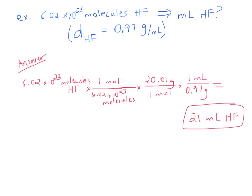Here is the answer. Start with 6.02 times 10 to the 23rd molecules of HF. You don't want molecules, so following the roadmap, go from molecules to moles. The conversion between molecules and moles is Avogadro's number: 6.02 times 10 to the 23rd. Molecules cancel out and now you're in moles. Now go from moles to grams using the molar mass. The molar mass of HF: H is 1.01 and F is 19, so you add up to 20.01 grams per mole. Moles cancel out and now you're in grams.